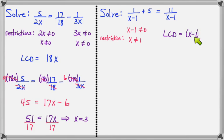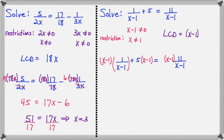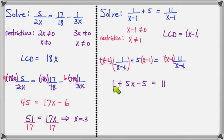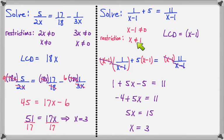We multiply everything by x - 1. The (x-1)s cancel on the first term, leaving 1. Then we distribute the 5: 5 times x and 5 times -1. The (x-1)s cancel on the right, leaving 11. So we get 1 + 5x - 5 = 11, which simplifies to 5x - 4 = 11. Add 4 to both sides: 5x = 15. Divide by 5: x = 3. Since 3 is not a restriction, x = 3 is valid.